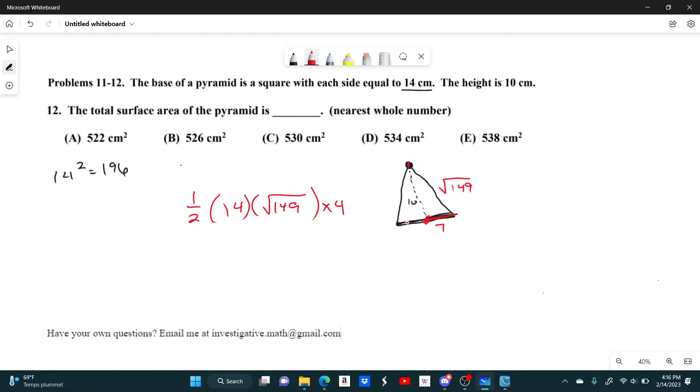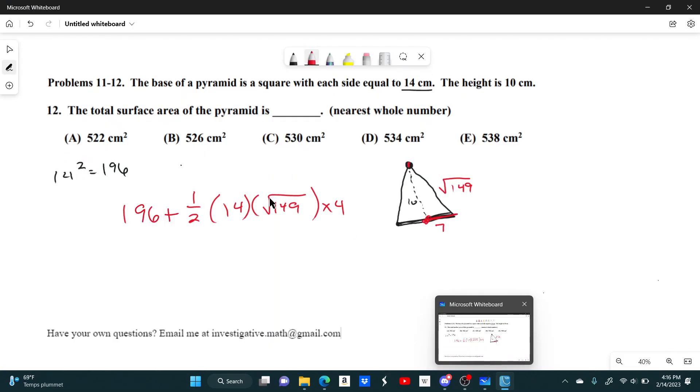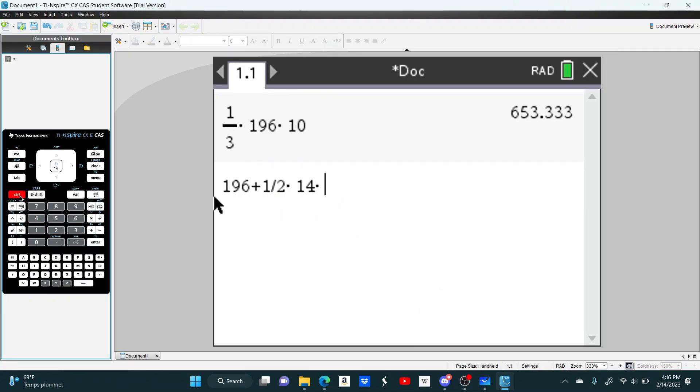And then to find the total surface area, all you have to do is add this 196. You have to add the square part at the bottom. So let's see what this gives us. 196 plus 1/2 times 14 times the square root of 149.